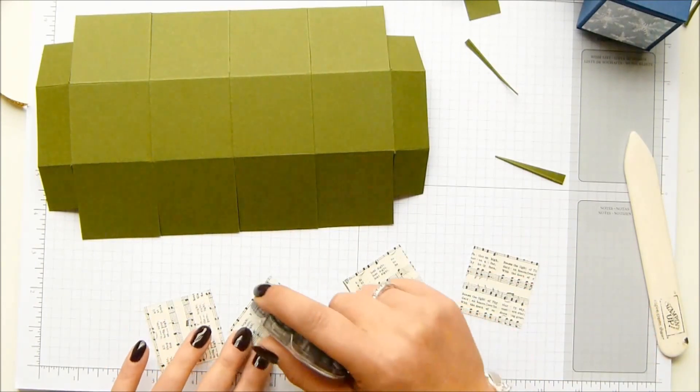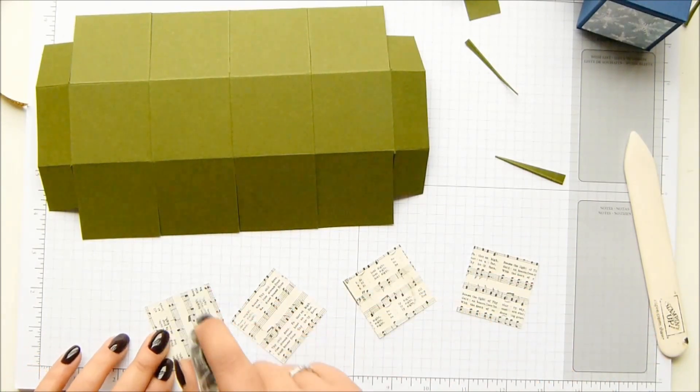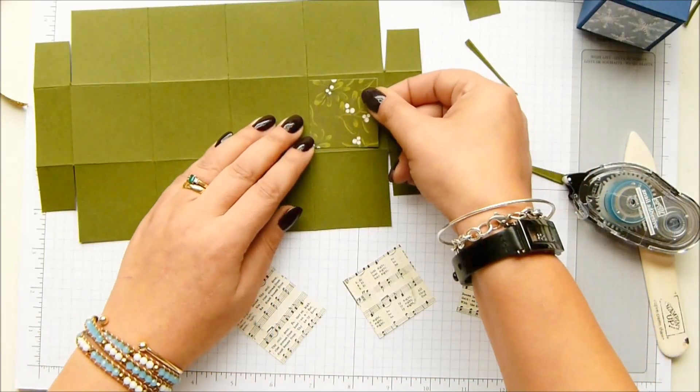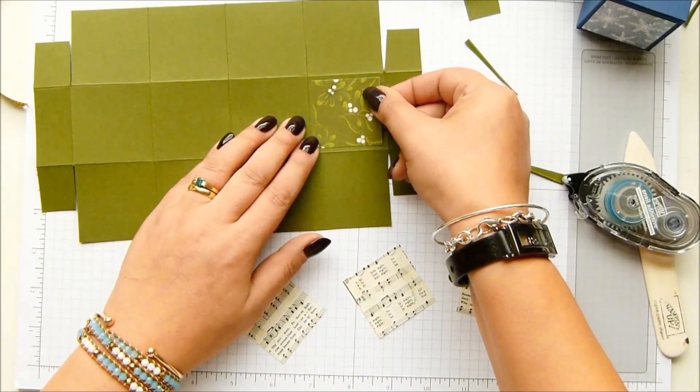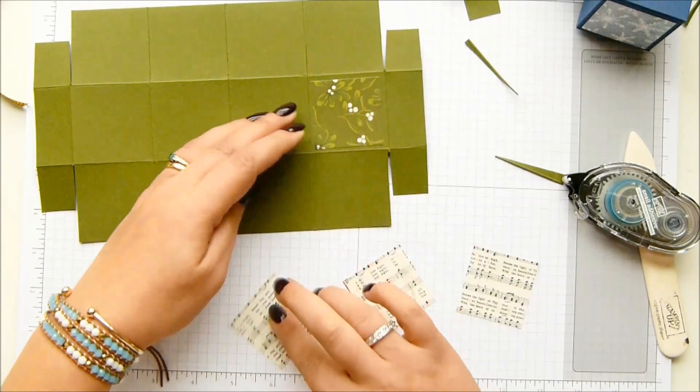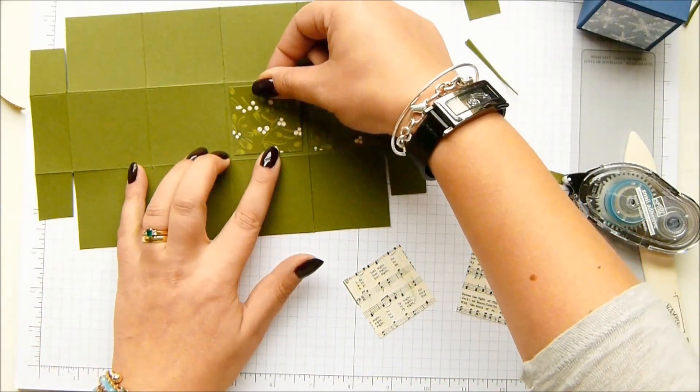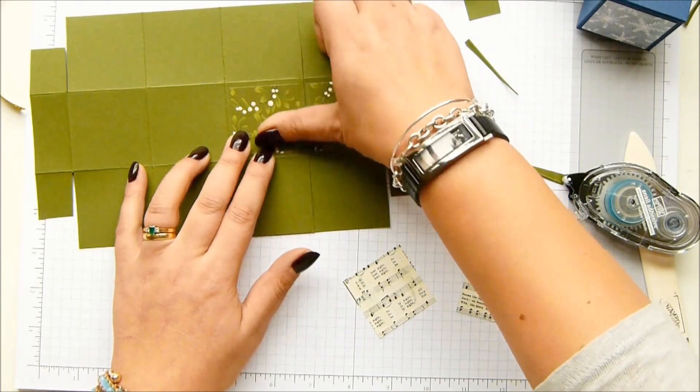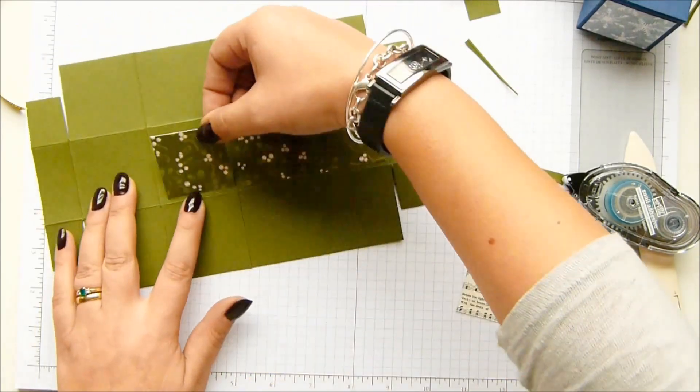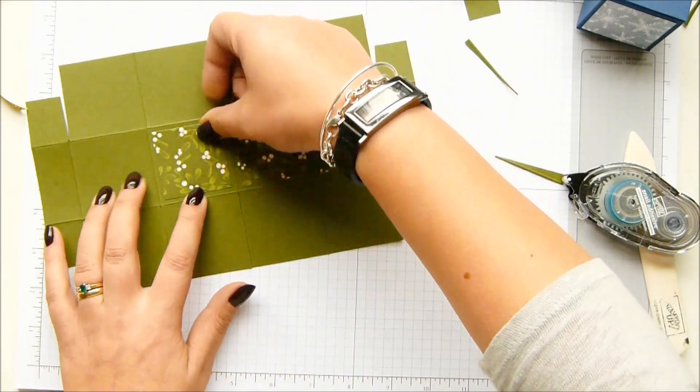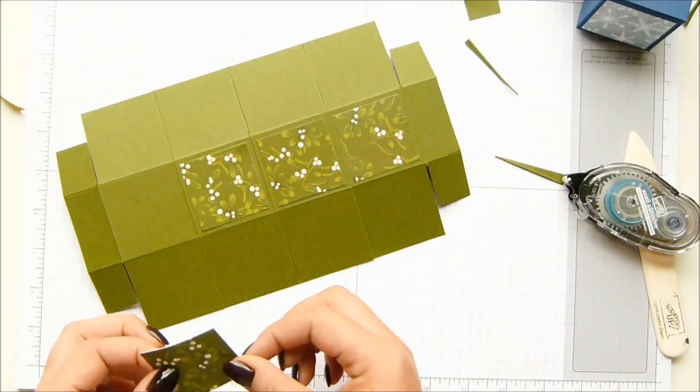So I'm just going to put some snail on the back and obviously you choose patterns, colors and all of that that's going to match your decor, or if you're gifting it, if you happen to know the recipient's decor. I just fancy doing something different